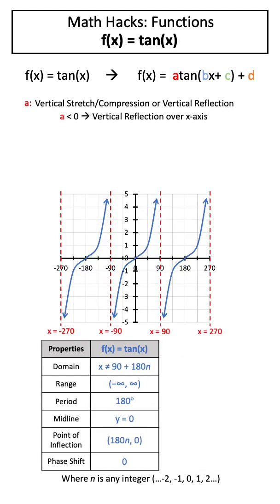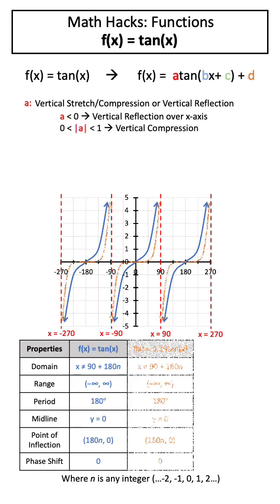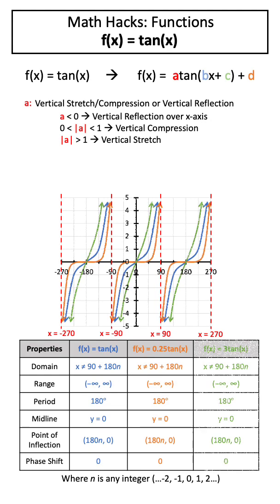If a is less than 0, this will vertically reflect our function over the x-axis. If the absolute value of a is between 0 and 1, this will vertically compress our function, whereas if the absolute value of a is greater than 1, this will vertically stretch our function.